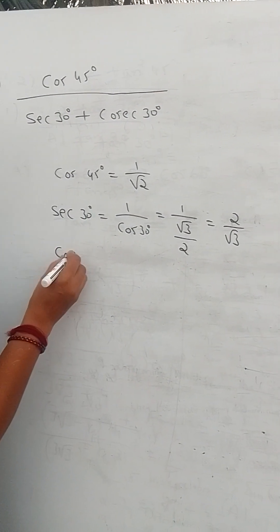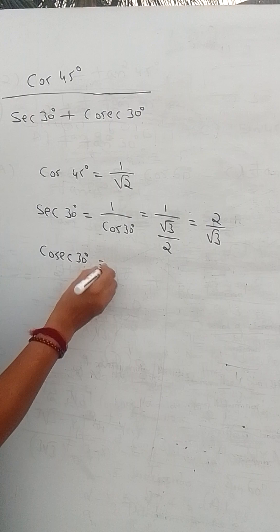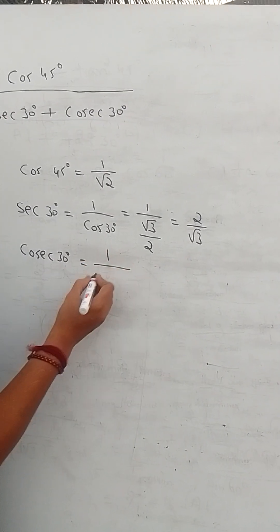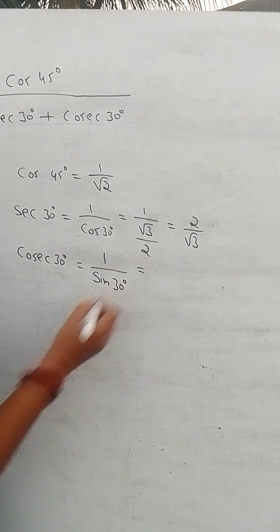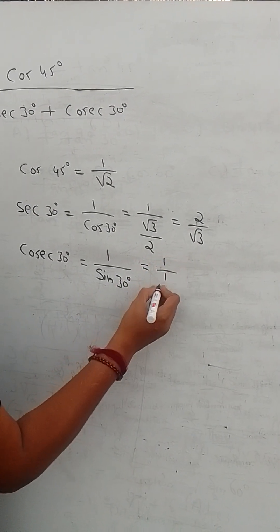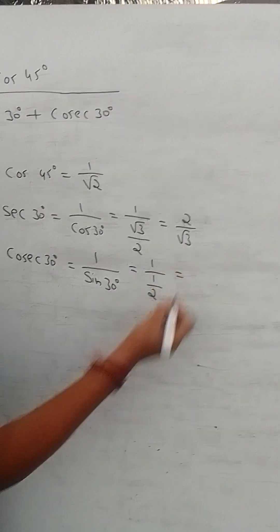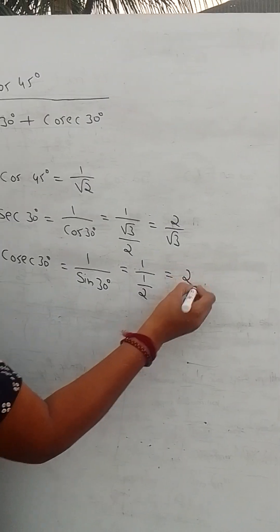Secant 30 is reciprocal of sin 30. Know the value of sin 30, that is 1 by 2, and its reciprocal is 2.